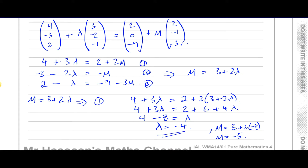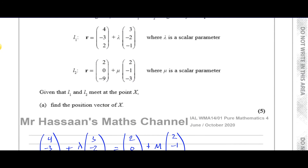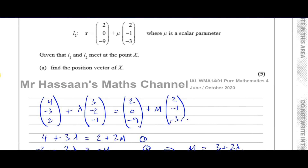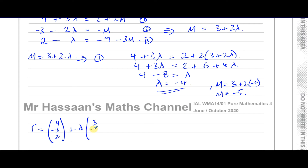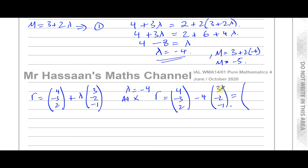If I put lambda = minus 4 into the equation for L1, it should give me the position vector of X. So R = (4, -3, 2) + (-4)(3, -2, -1). That gives: 4 minus 12 = minus 8 for i; minus 3 plus 8 = 5 for j; and 2 plus 4 = 6 for k. So the position vector of X is (-8, 5, 6).